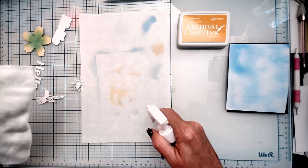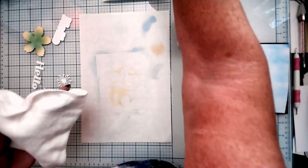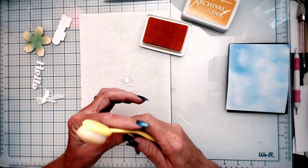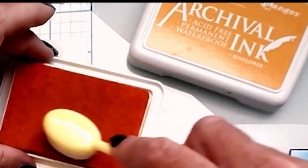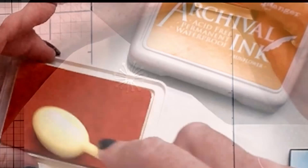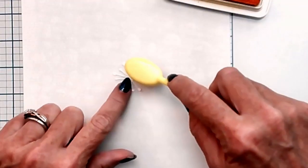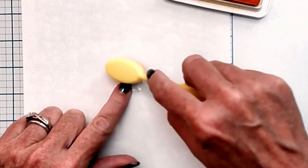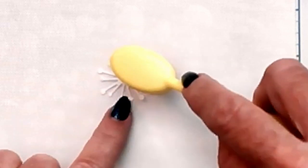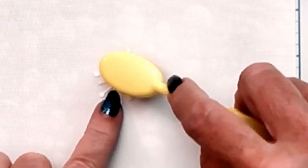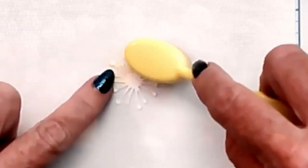In between, I need to clean off my mat a little bit. Yes, those colors will mix together. For the stamen in our flower is Sunflower from Archival Inks. Same process, same method.